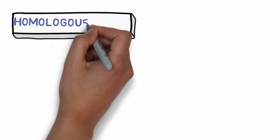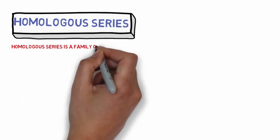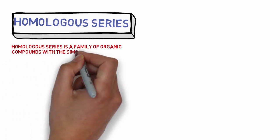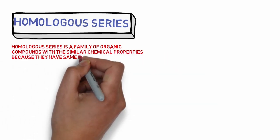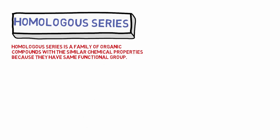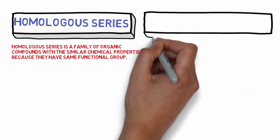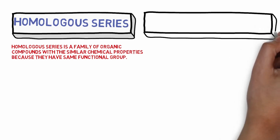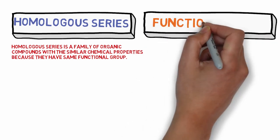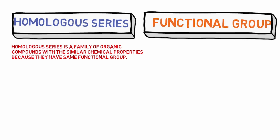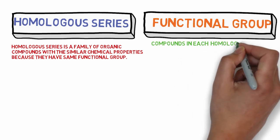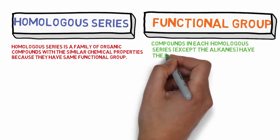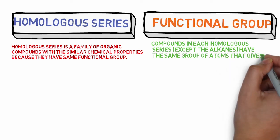Now we look at the definition of a homologous series. A homologous series is a family of organic compounds with similar chemical properties because they have the same functional group. What is a functional group? In each homologous series, except alkanes, there is the same group of atoms that gives specific chemical properties.